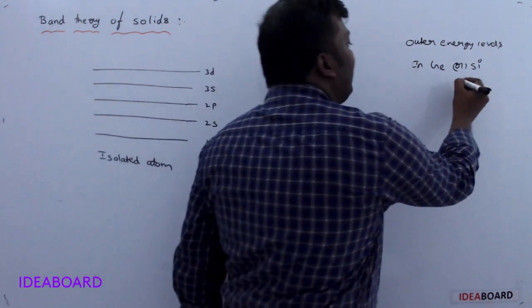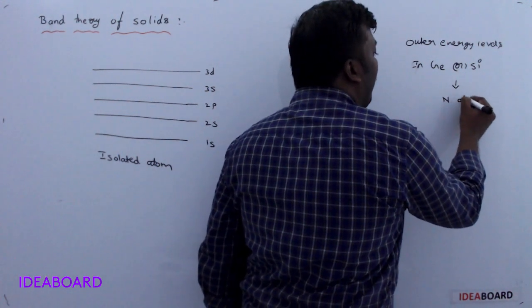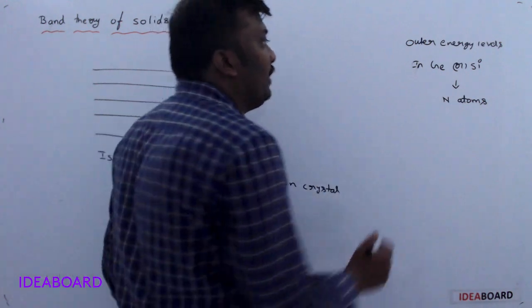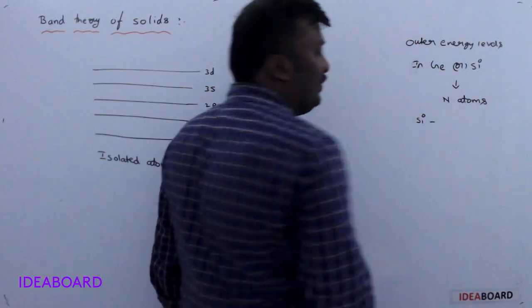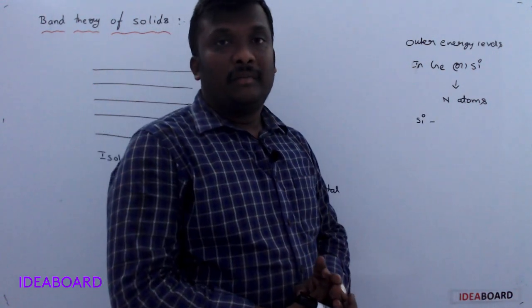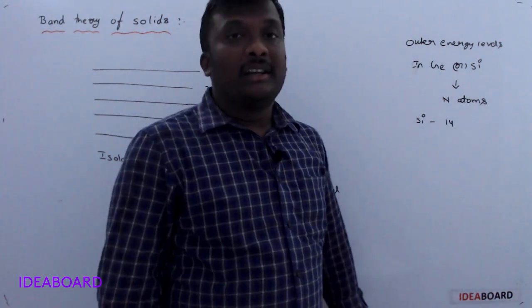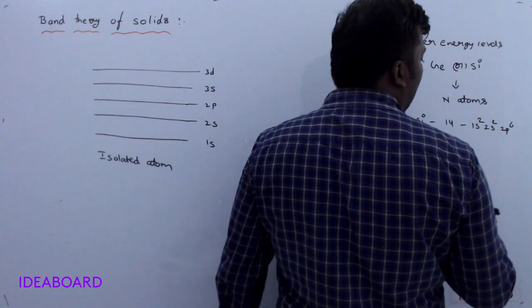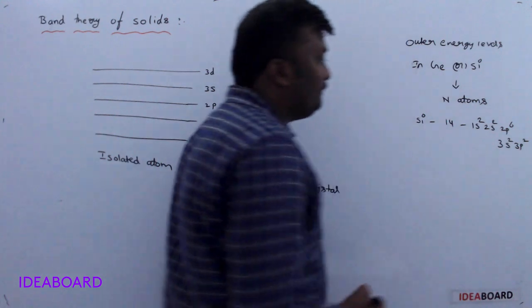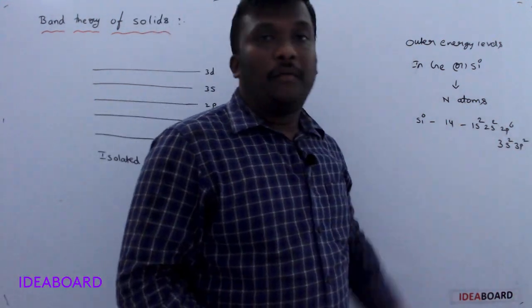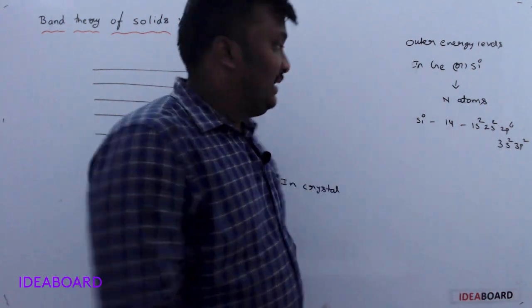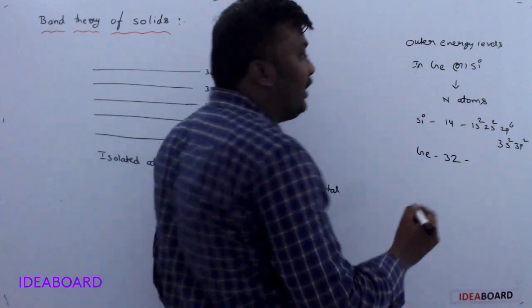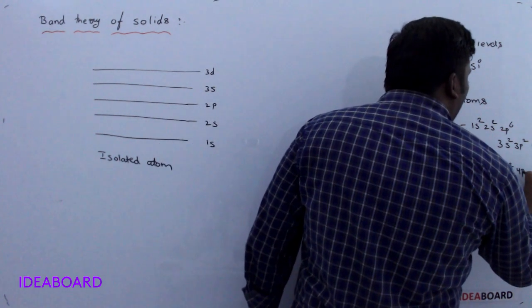Let us discuss the energy levels in a germanium or silicon crystal containing n number of atoms. Silicon has atomic number 14 with electronic configuration 1s², 2s², 2p⁶, 3s², 3p² — total 14 electrons. Germanium has atomic number 32, with the outermost configuration including 4s², 4p². The innermost orbits are completely filled and do not change in the crystal.